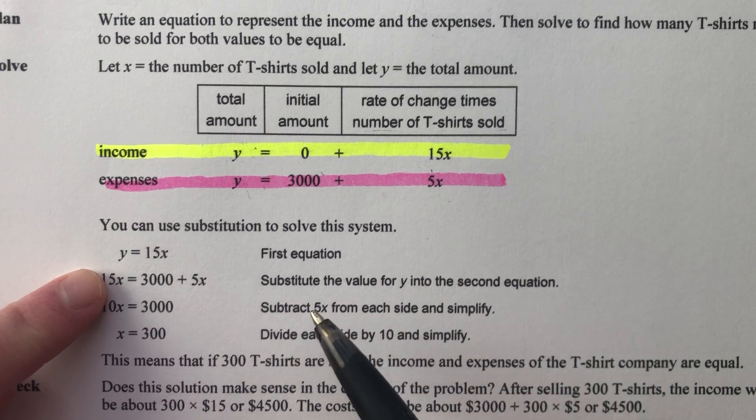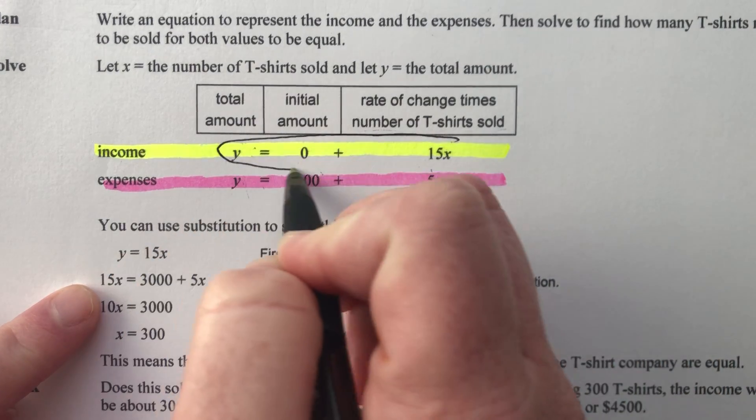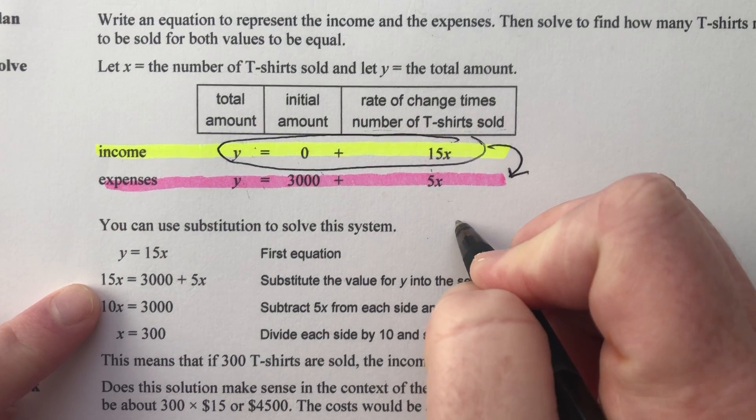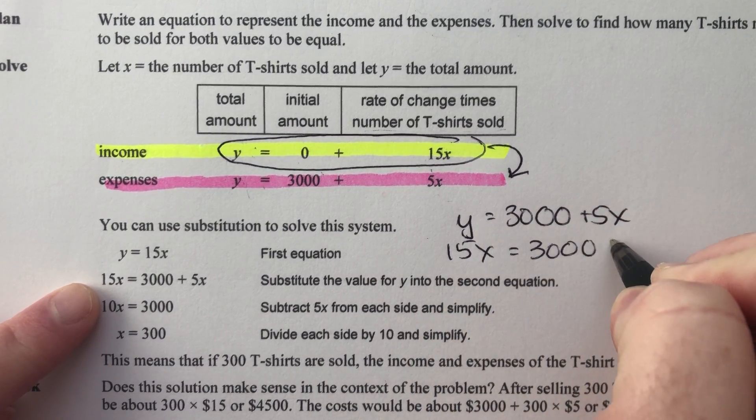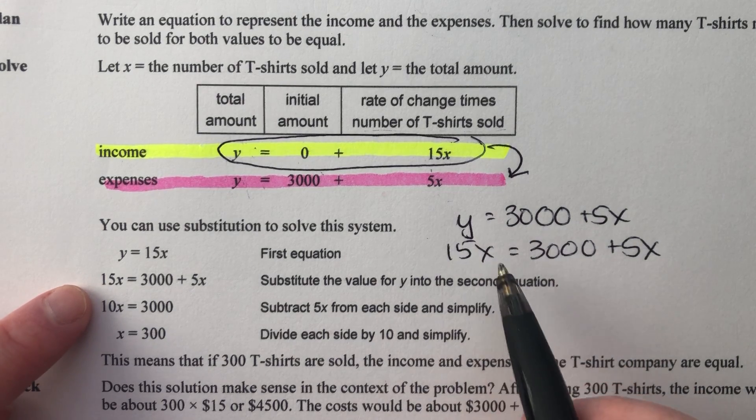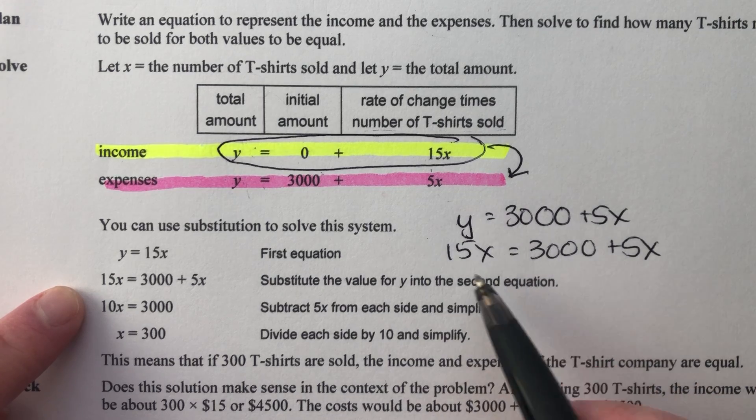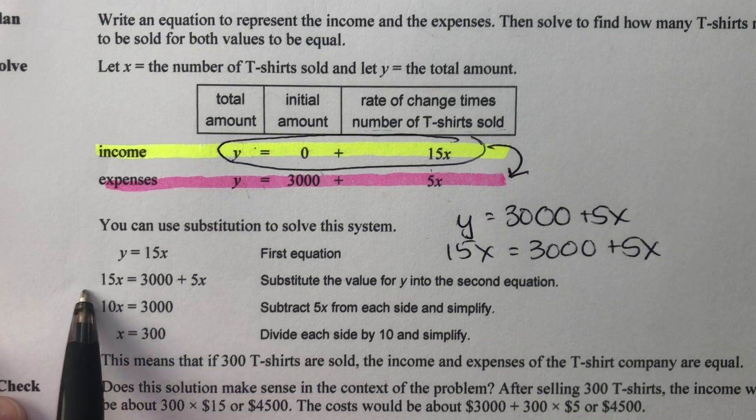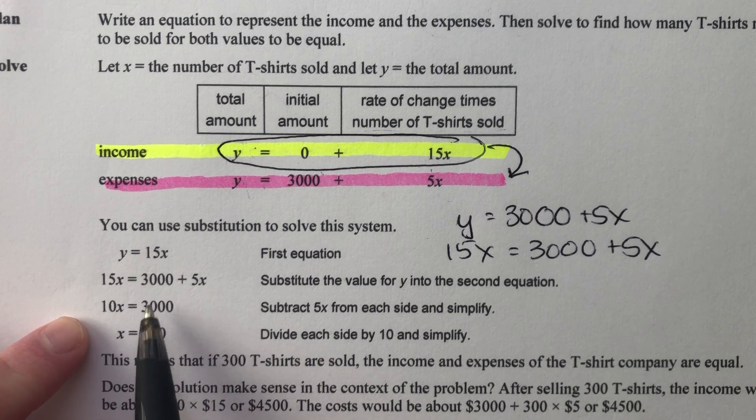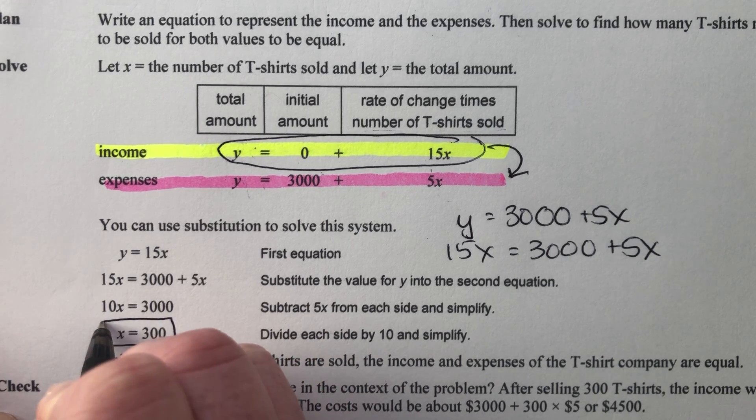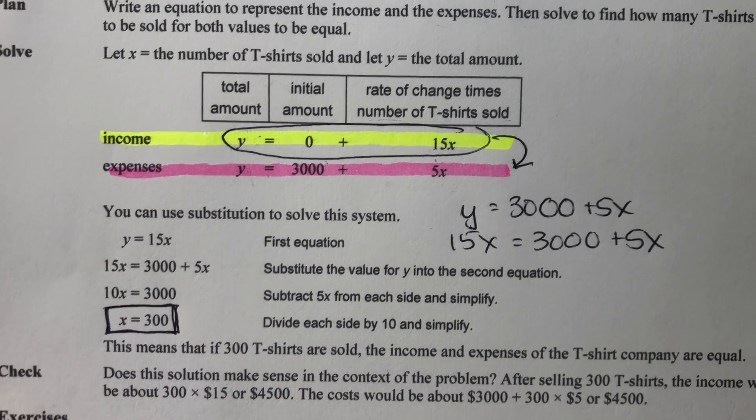First equation equals 0 plus 15X or Y equals 15X. Substitute the value into the second equation. So instead of Y equals 3,000 plus 5X, they said 15X equals 3,000 plus 5X. So what does X have to be? How many t-shirts do you have to sell for the money you make to equal the money you spent? We spent $3,000 on a machine. So that's a lot of t-shirts we're going to have to sell. So then if you follow the math, get rid of your smallest X minus 5X on both sides. So we get 10X equals 3,000 divide by 10. X equals 300.